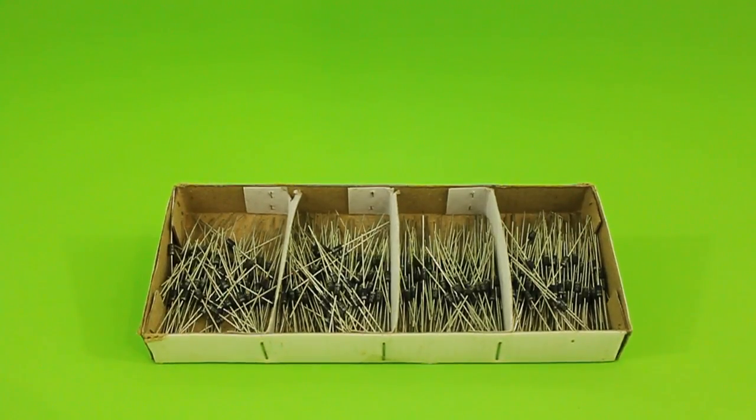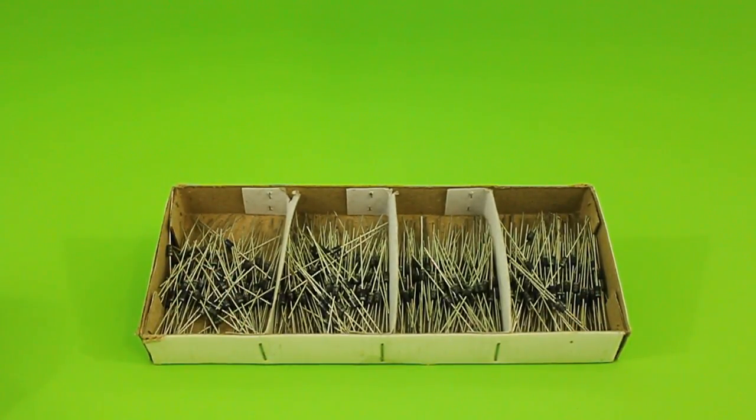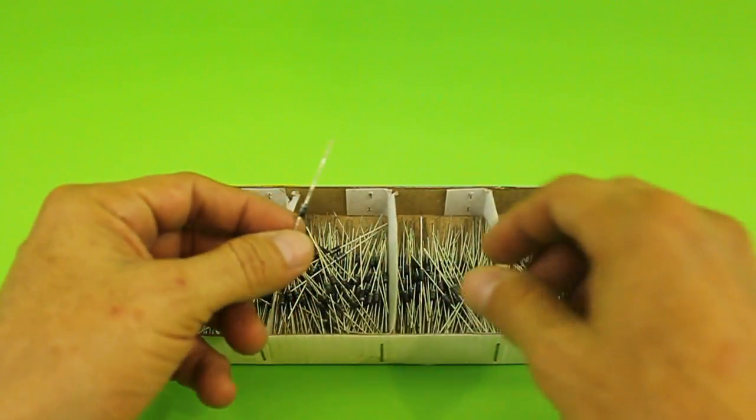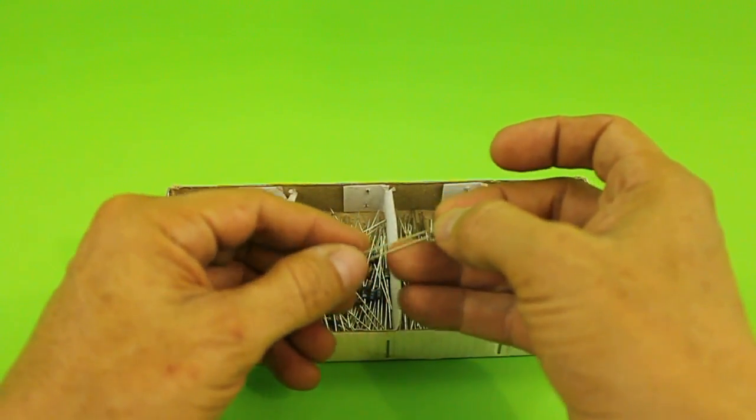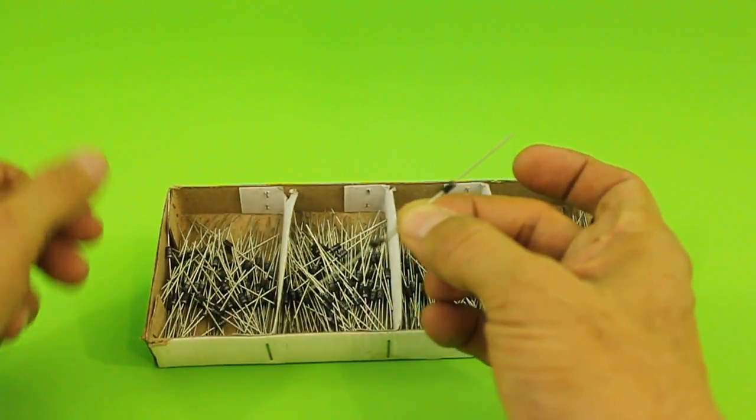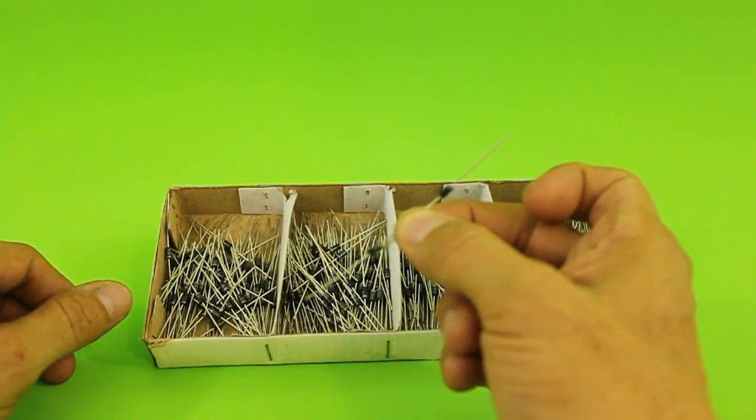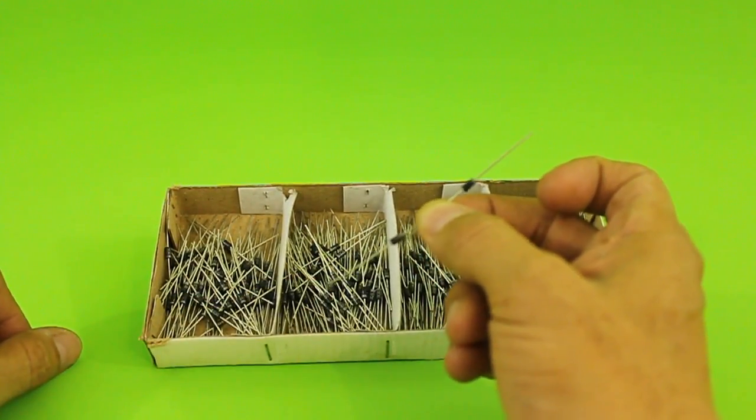You can make your own high voltage diodes using low voltage diodes such as these 1N4007s. These diodes are 1kV at 1 amp, but if you connect two of them in series you will get a diode of 2kV at 1 amp. If you connect three you will get 3kV, etc.